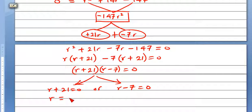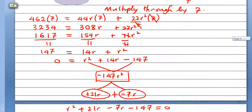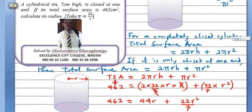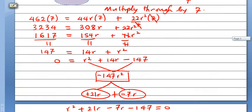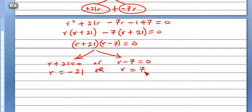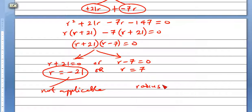r is negative 21, or we have r is 7. And then since those dimensions are given to us in centimeters, that means it's going to be centimeters. But it is not possible for radius to be negative. So this one is not applicable. This will be our answer. Radius r is 7 centimeters.